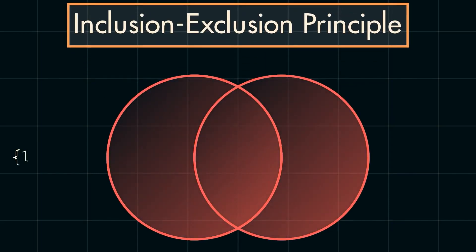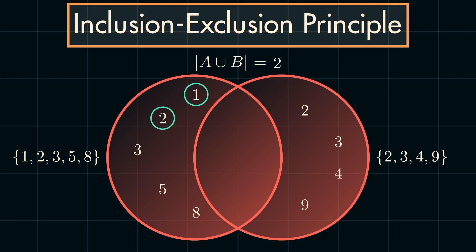For a quick rundown of this principle, take the sets {1, 2, 3, 5, 8} and {2, 3, 4, 9}, and say we want to find the number of unique elements between both sets. One way to do this is to sum the number of elements in both sets. But doing this means we would be double-counting elements that are shared in both sets. So, we need to remove these from the count. In math speak, this means to find the number of elements in the union of these sets, we can add the number of elements in both sets, subtract the intersection of both sets.